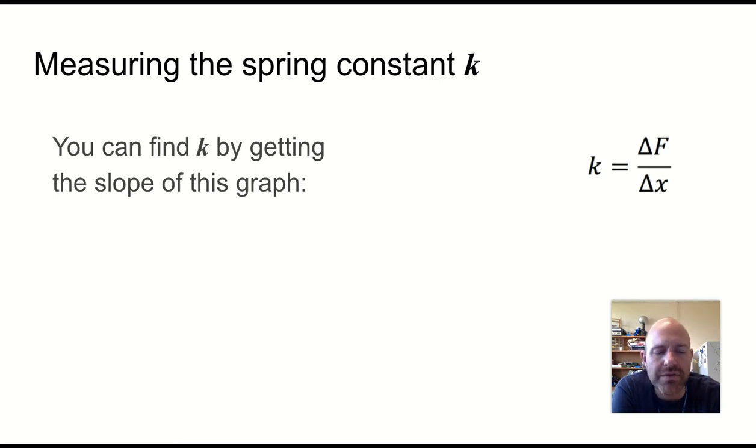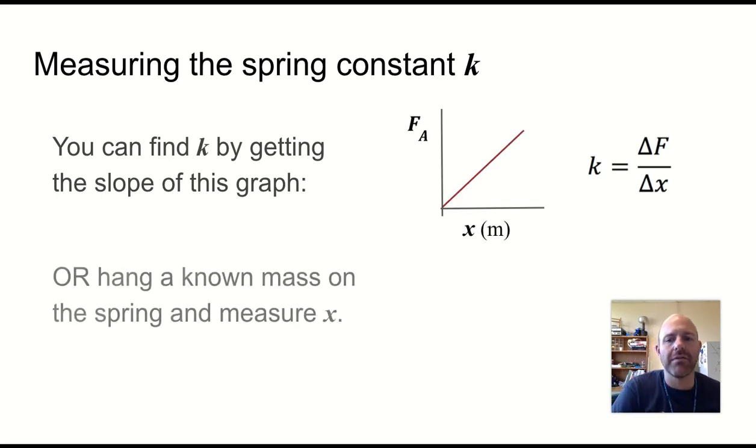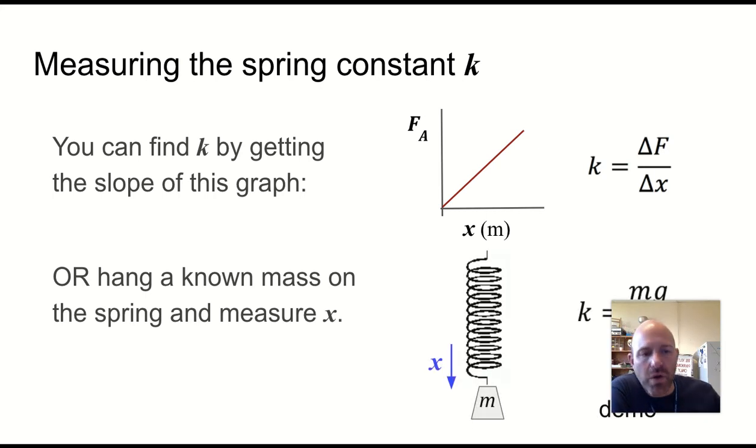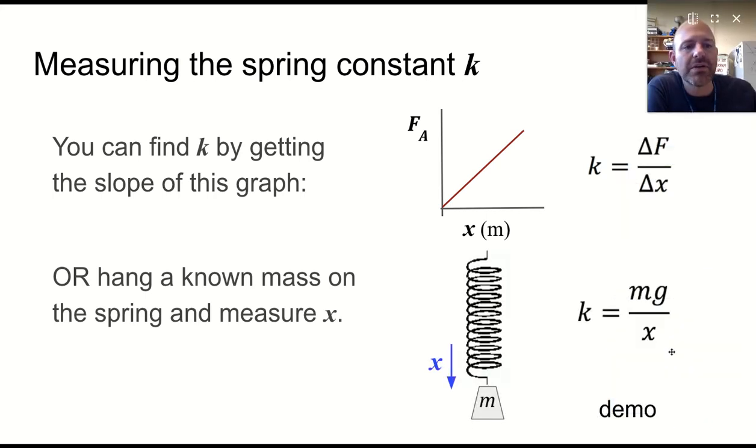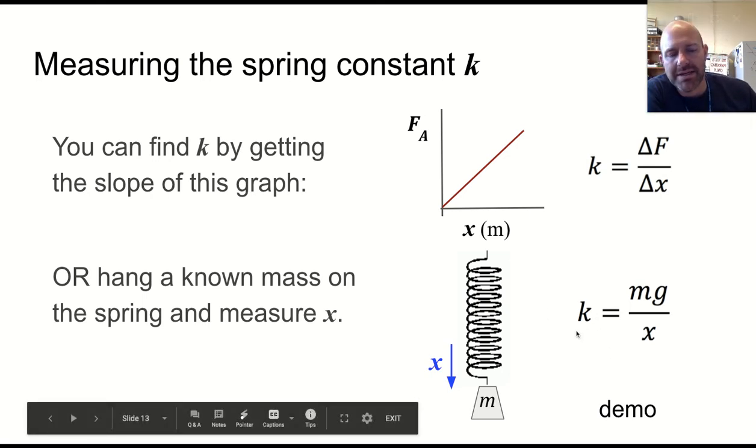So how do we actually do this? Well, as I said, you can get the slope of a graph if you have a graph of force versus position. But you can also do this with a single data point. If you were to hang a mass and let it come to equilibrium right there on a spring and measure how far down that mass is from where the spring was when there was no mass on it, we can say that the force applied was the weight of that mass and the distance it stretched was x. And that can give you a spring constant k.